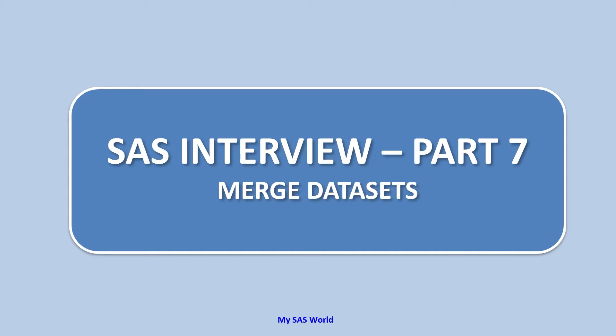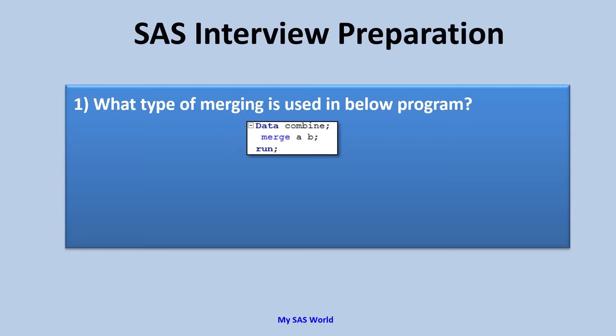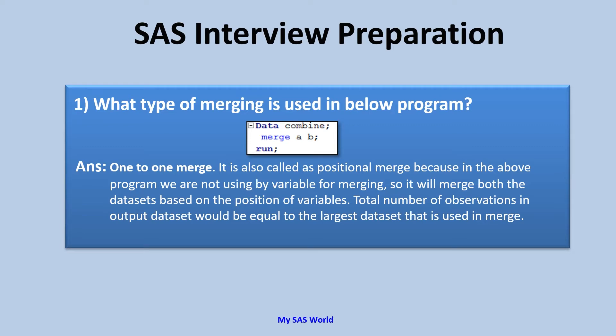Let's start. Here is the first question: what type of merging is used in the below program? Data combine; merge dataset_a dataset_b; run. Here we are not using a BY statement to merge, so it is a positional merge. The answer is one-to-one merge, also called positional merge, because we are not using a BY variable for merging.